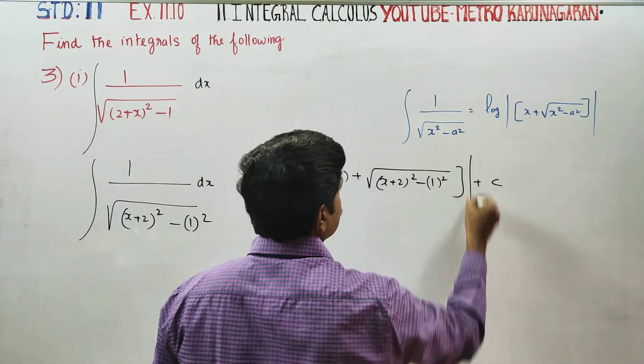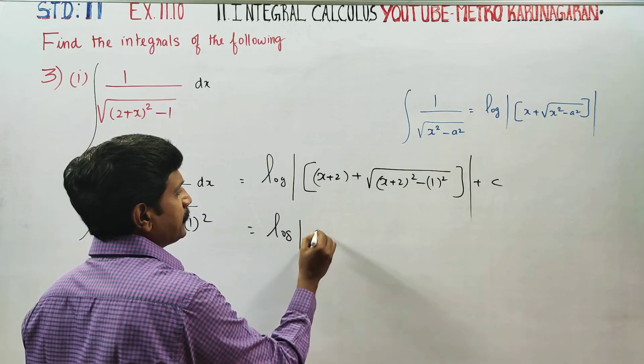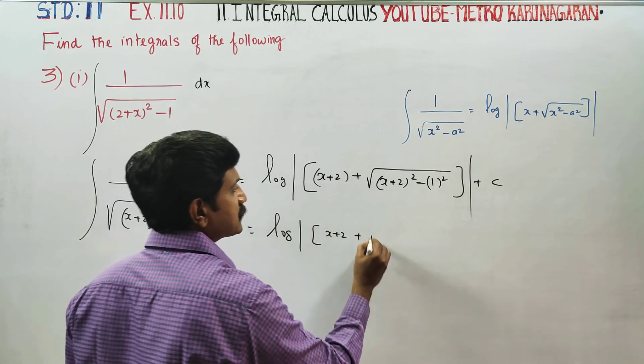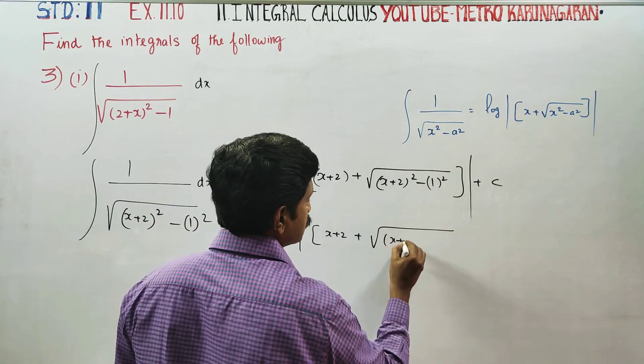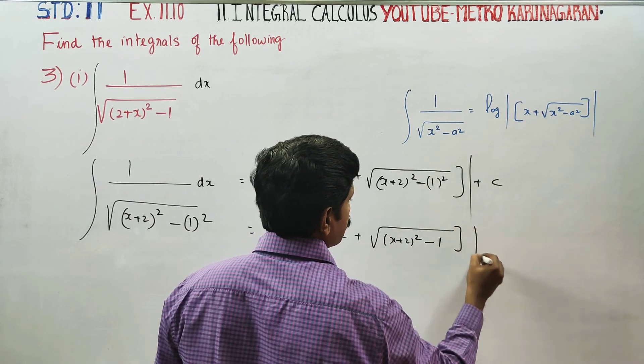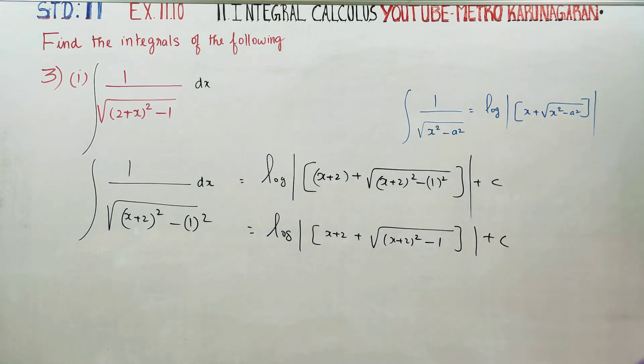Plus C. It's the final answer. You can expand X plus 2 plus root of X plus 2 all square minus 1 plus C. Simply check the book answer and you're done. Thank you.